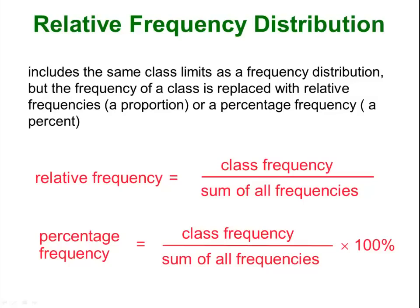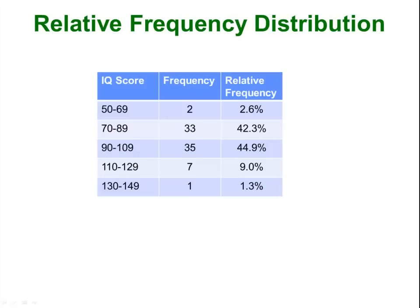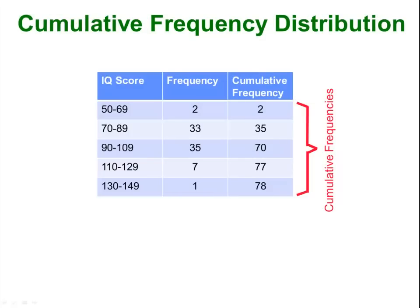A relative frequency distribution is just like a frequency distribution, but instead of telling us specifically how many values are in each class, it tells us what percentage of the data is in each class. It is a little bit more enlightening — instead of just telling you there are 7 in this class, you can tell me that represents 25% of the data, and that means more. You can see that 33 actually represents 42.3% of our data, and those 7 people with an IQ in the 110 to 129 range represents only 9% of our data. You can also have a cumulative frequency where the numbers in the far right column are just summing up as we go — 35 is just 33 plus 2, and 70 is 35 plus 33 plus 2, etc.